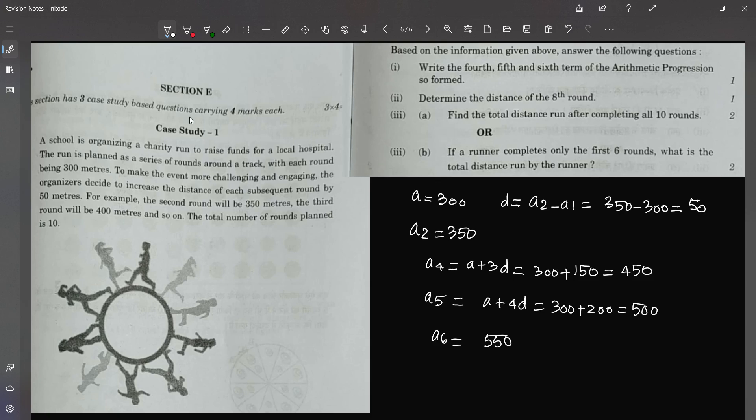Determine the distance of the 8th round. So a8 for the second subdivision, distance of the second round. So that will be a8 is equal to, they are not asking until the 8th round, they are just asking for that particular 8th round alone.